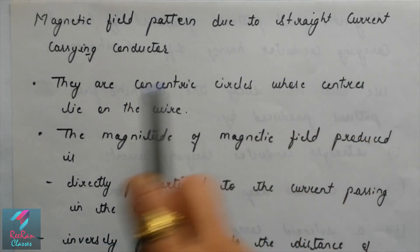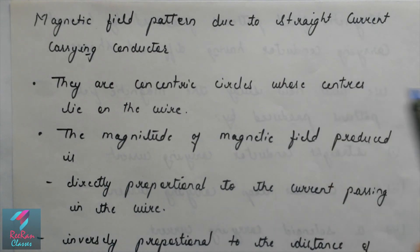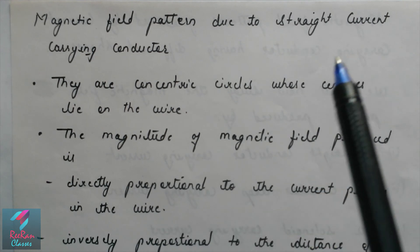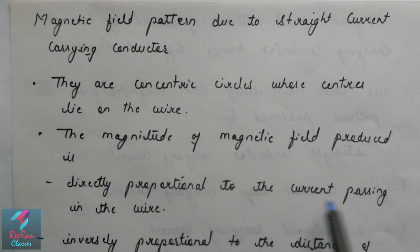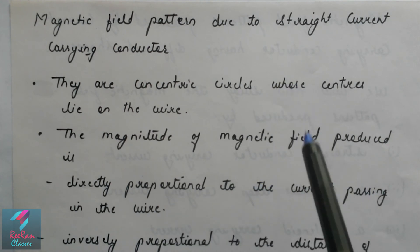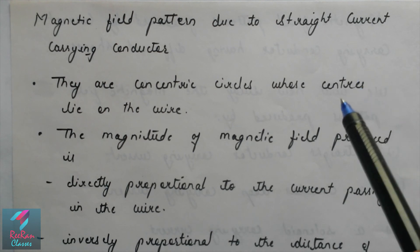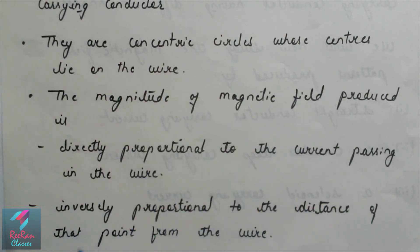From this experiment, we have seen that the magnetic field pattern due to a straight current carrying conductor consists of concentric circles whose centers lie on the wire. We have seen that the magnitude of the magnetic field is directly proportional to the current passing in the wire — if we increase the current, the strength of the magnetic field increases. We have also seen that the magnitude of the magnetic field is inversely proportional to the distance from the wire, because they are inversely proportional to each other.